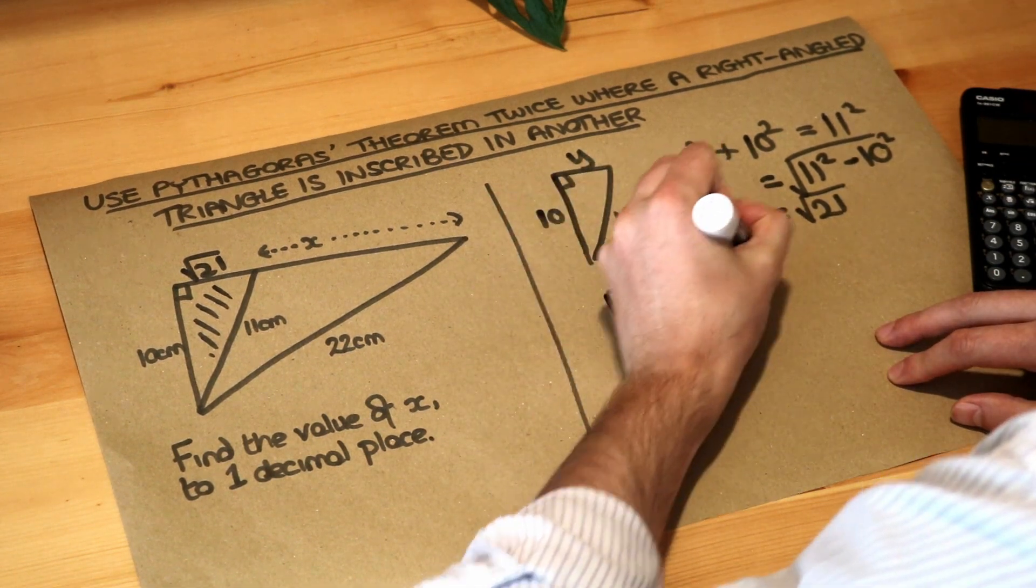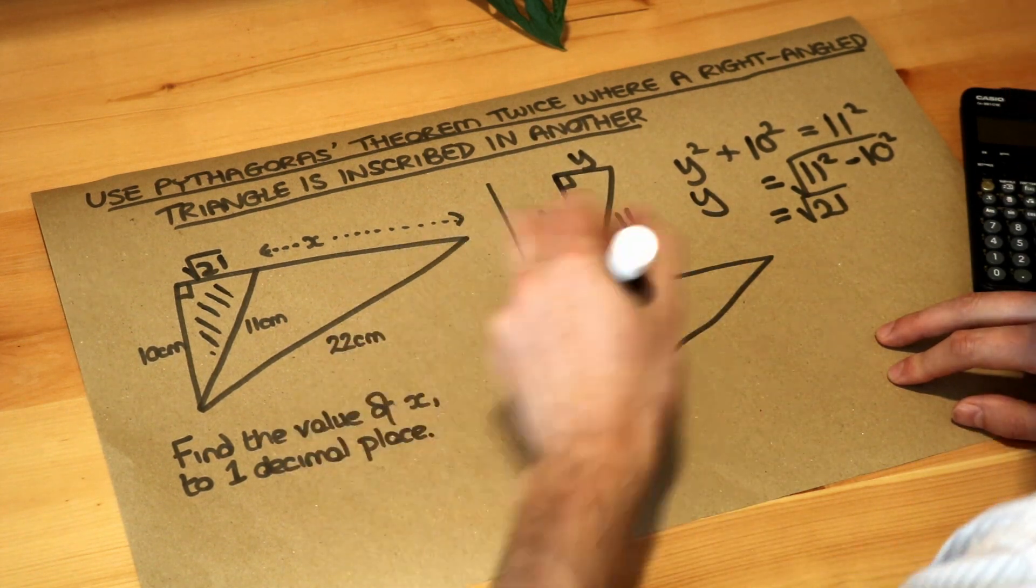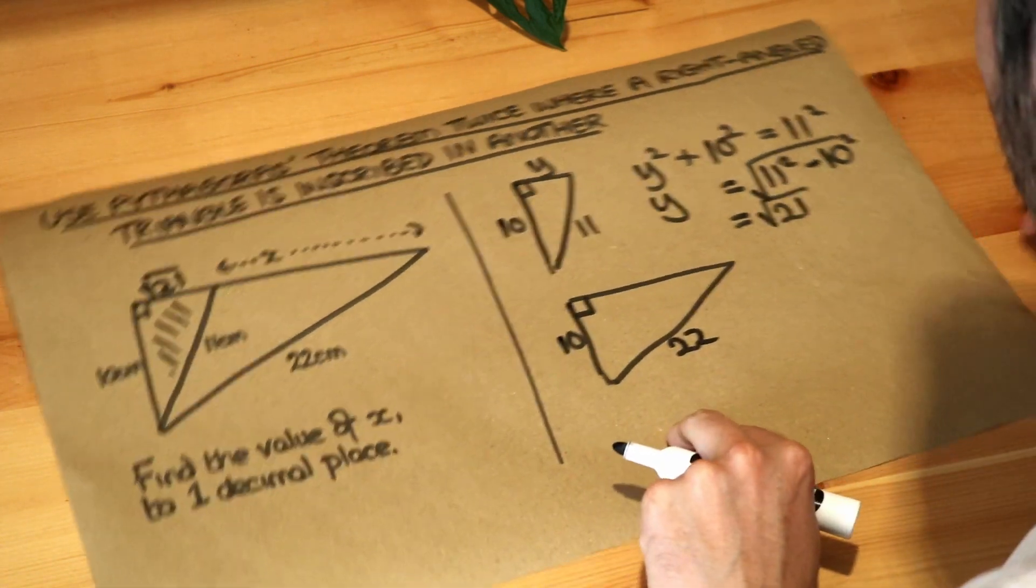So let's draw that. This is the whole thing. We've got the 10. It's the right angle here. We've got the 22 and we can do Pythagoras theorem again.